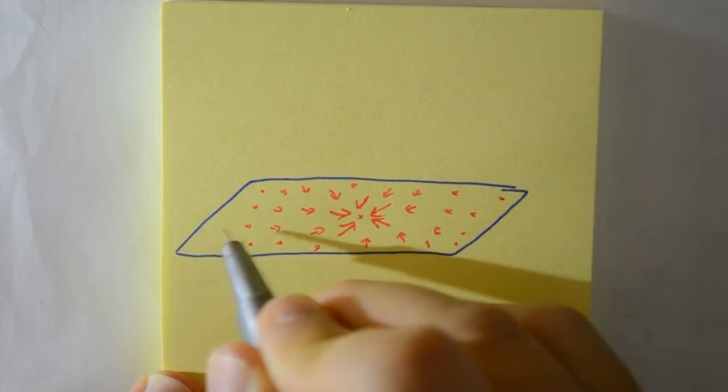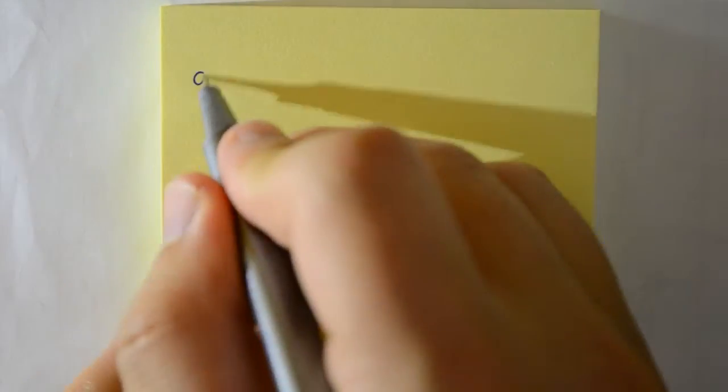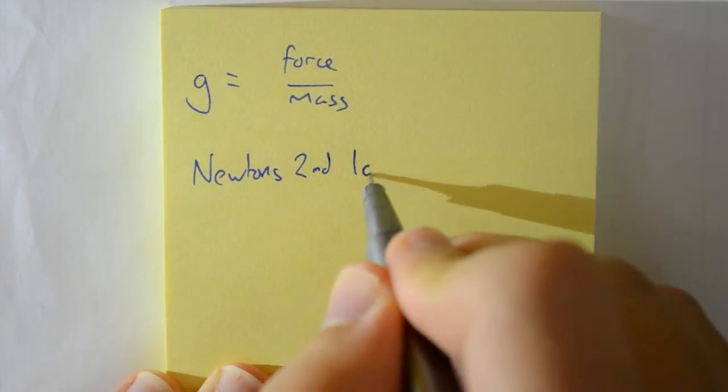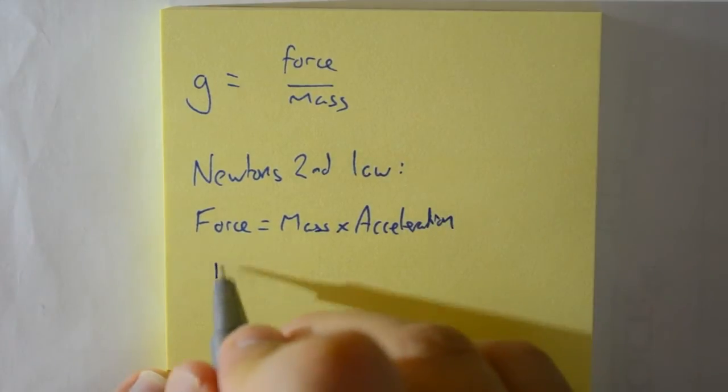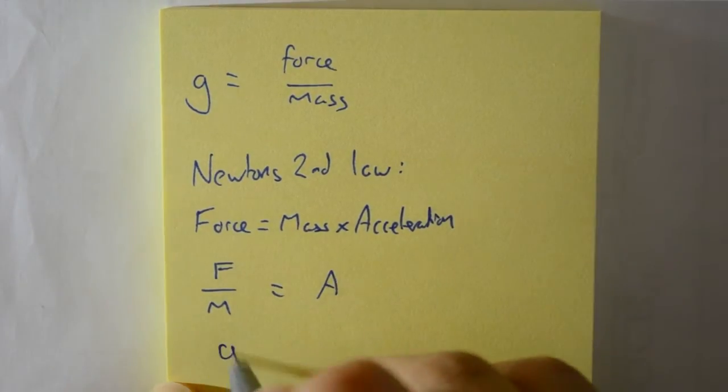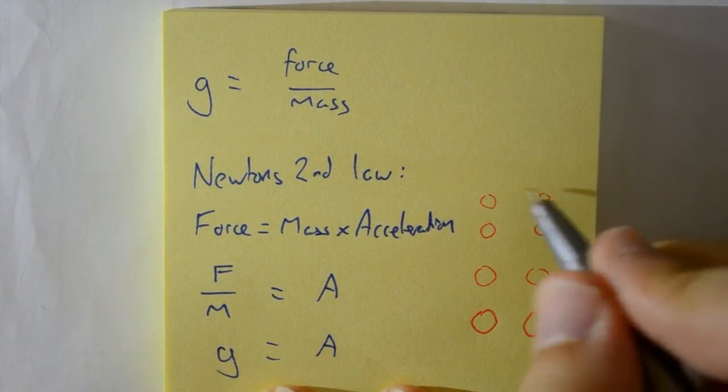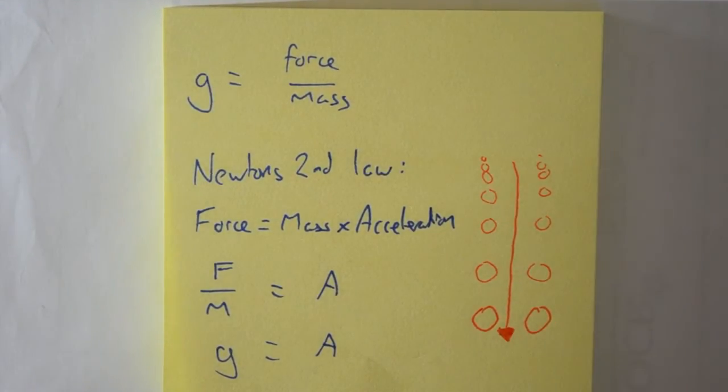For gravity, at each point, the direction is towards the centre of mass, and the strength of gravity is force per unit mass. And if you take Newton's law of force equals mass times acceleration, and you rearrange it, you'll find that force per unit mass is equivalent to acceleration. And this is why gravity is often talked about as an acceleration of 9.8 meters per second squared. And this is also why all objects fall at the same rate. Gravity is an acceleration applied to each mass, not just a force.